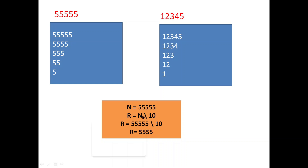So if the number A equals 5 5 5 5 5, then R = A \ 10 means we are dividing 5 5 5 5 5 by 10 and taking the quotient. Integer division by 10 removes the last digit, so the remaining four digits 5 5 5 5 will be stored in R. We are doing this operation five times, so we use a for loop.